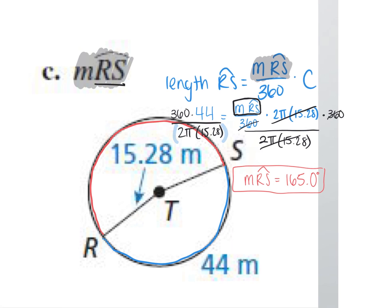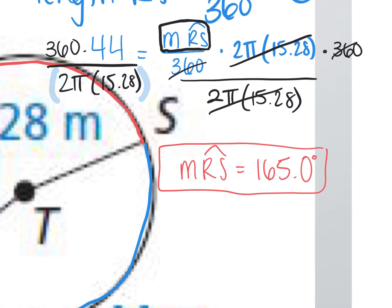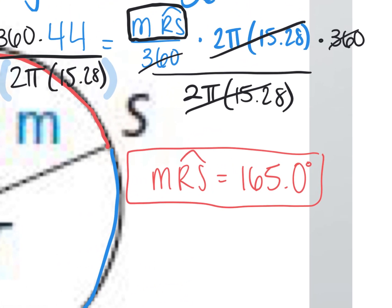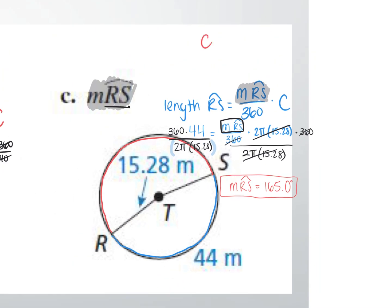What questions do we have? Hannah asks how to remember all of it. It's really only two formulas: the circumference formula, which is 2πr, and the arc length formula, which is the measure of the arc over 360 times the circumference.